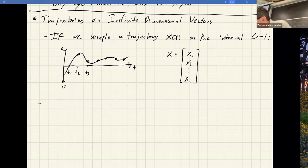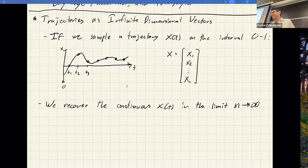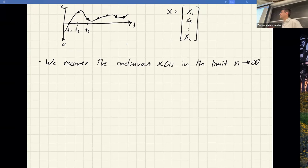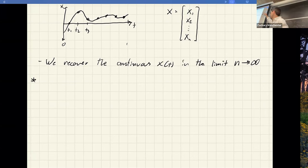Think of these things as vectors — mathematicians might not love this, but it works out in all reasonable cases. Now we talk about differentiating a function of a function with respect to a function. Every time I say 'function' here, think 'trajectory' — X(t), a function of time, treated as a vector in the infinite sampling frequency limit.